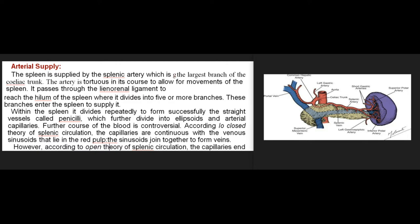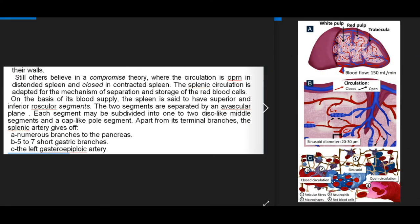The penicilli further divide into ellipsoids and arterial capillaries. Further course of blood is controversial. According to the closed theory, capillaries are continuous with venous sinusoids in the red pulp. According to the open theory, capillaries open into the red pulp, from where blood enters sinusoids through their walls. A compromise theory holds that circulation is open in a distended spleen and closed in a contracted spleen.